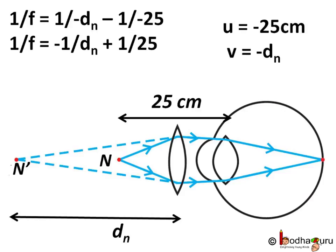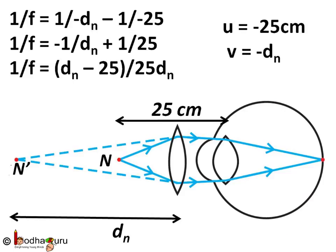Now, taking LCM, we get 1 by f is equal to d_n minus 25 divided by 25 d_n or we can say f is equal to 25 d_n divided by d_n minus 25. This is nothing but basically the reciprocal of 1 by f.